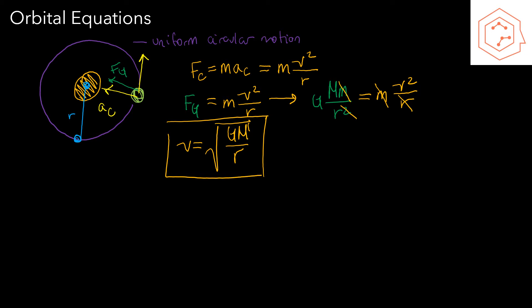Notice that the orbital velocity does not depend on the orbiting mass, little m. Little m does not matter — it could be a very large or very small number, and the velocity will stay the same.